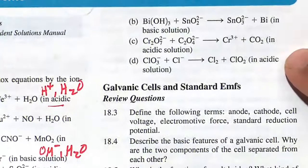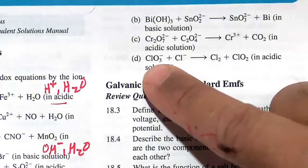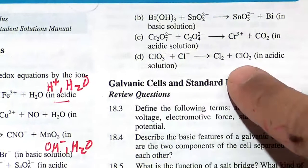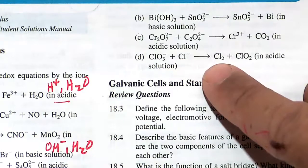All right, our final problem. We're asked to balance this equation here in acidic solution. So we have ClO3- going to ClO2, and then we have Cl- going to Cl2 diatomic.